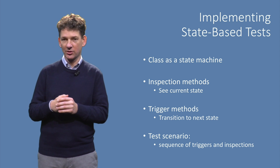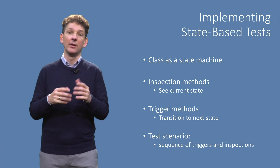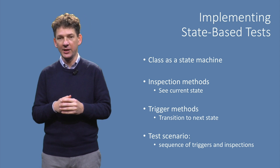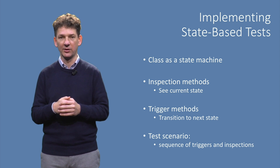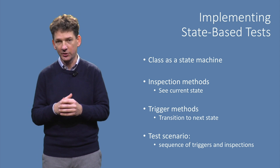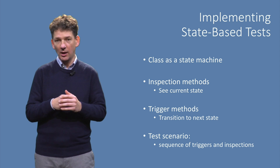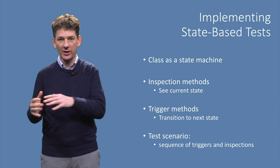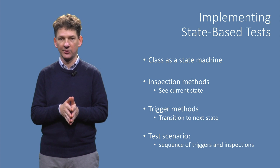In such classes we can distinguish two types of methods. There are inspection methods which do not alter any state — they just give us information about the values in the object. Such inspection methods inform us about the state of the object without modifying it. Then there are trigger methods. These methods correspond to events on transitions and do bring the object into a new state.